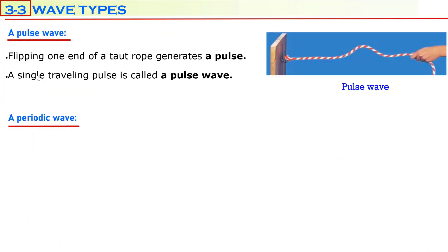Now, types of waves. Flipping one end of a rope generates a pulse — this shape is called a pulse. When you lift your hand up and down, you produce a pulse. If this pulse is traveling, this traveling disturbance is called a pulse wave. A single traveling pulse in physics is called a pulse wave.